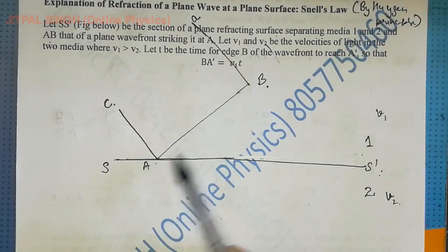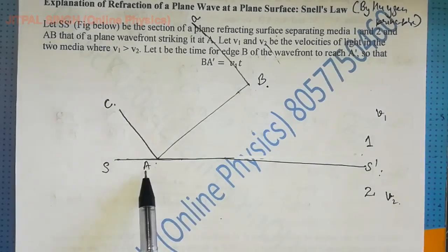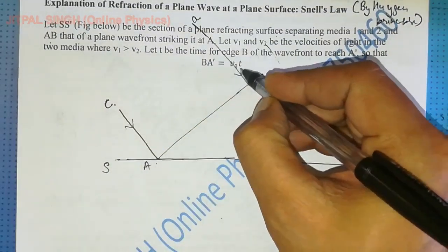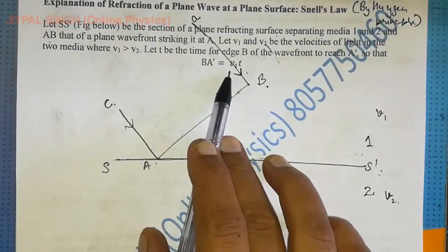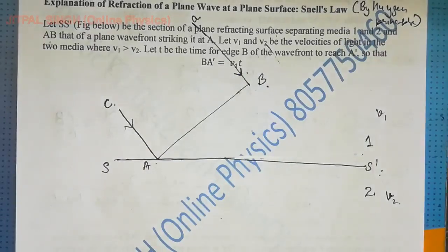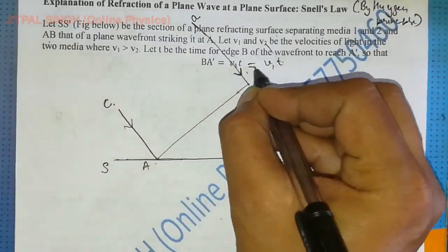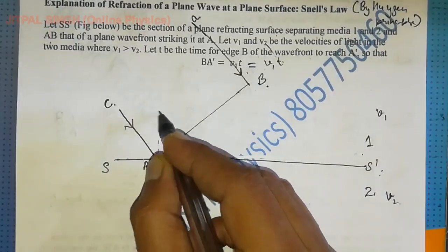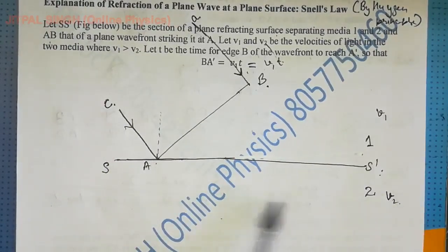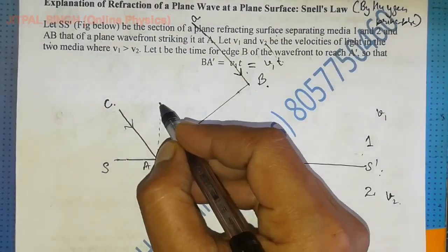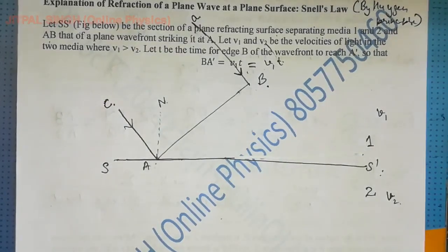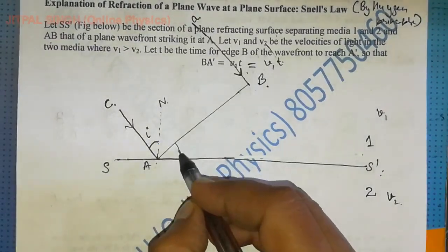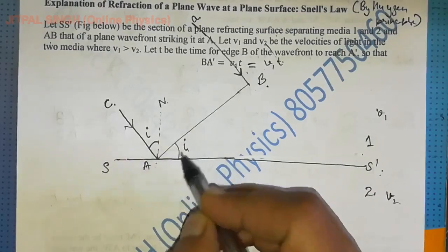Continuing from the previous video: AB is the plane wavefront striking the surface SS' obliquely at point A. CA is the incident ray and AB is also the incident ray. At point A we draw the normal — this dotted line is the normal to SS'. This point is N, so NA is normal to SS'. This is the angle of incidence, and by the property discussed earlier, this will also be the angle of incidence.